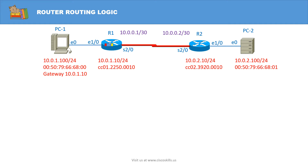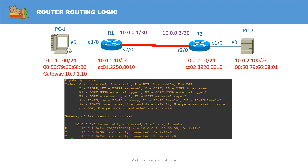First, it checks the frame check sequence field in the trailer of the frame to see if there are any errors. If it finds any errors, then it will discard the entire frame. In this case, let's assume it doesn't find any errors, so it will de-encapsulate the header and the trailer of the frame to get the IP packet. Then it finds the destination IP from the header of the packet — in this case, the destination IP is the IP address of PC2. Then it checks its routing table and finds a matching route.